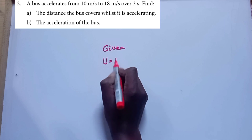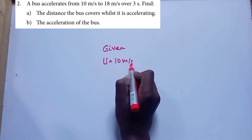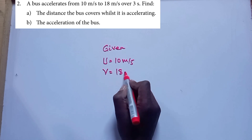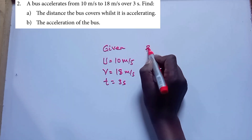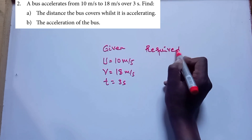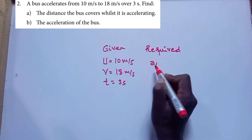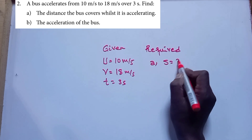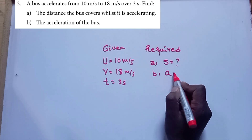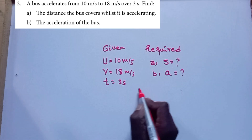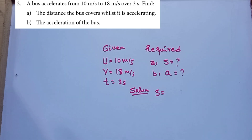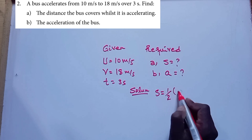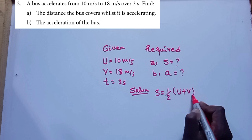Given data: initial velocity = 10 m/s, final velocity = 18 m/s, time = 3 seconds. Required: part (a) find distance, part (b) find acceleration. Solution for part (a): distance is equal to 1 over 2 times (initial velocity plus final velocity) times time.